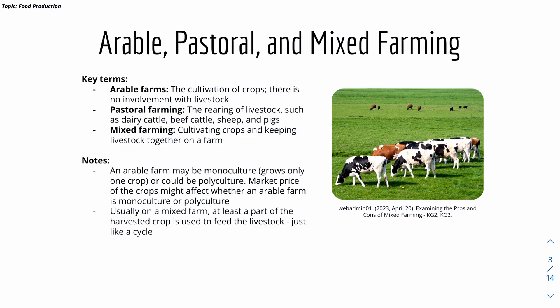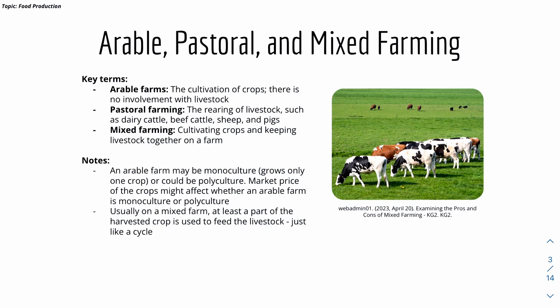An arable farm may be monocultured, meaning it grows one crop such as wheat or a certain type of flower. Or it could be polycultured, which is the opposite. The market price of crops may affect whether a farm is monoculture or polyculture, relating to economics and demand. On a mixed farm, part of the harvested crop — such as grass — is used to feed livestock like cattle.